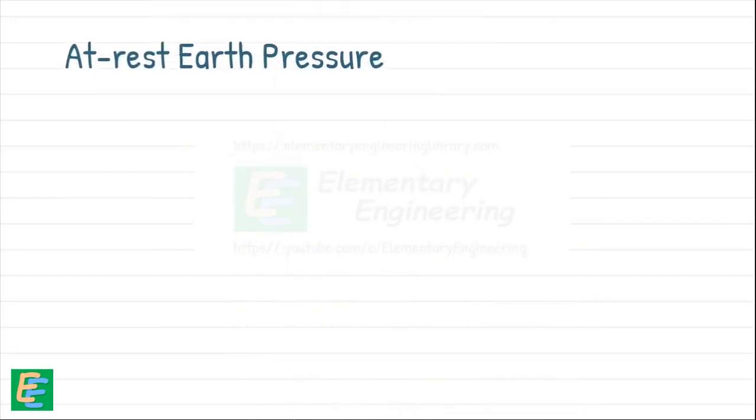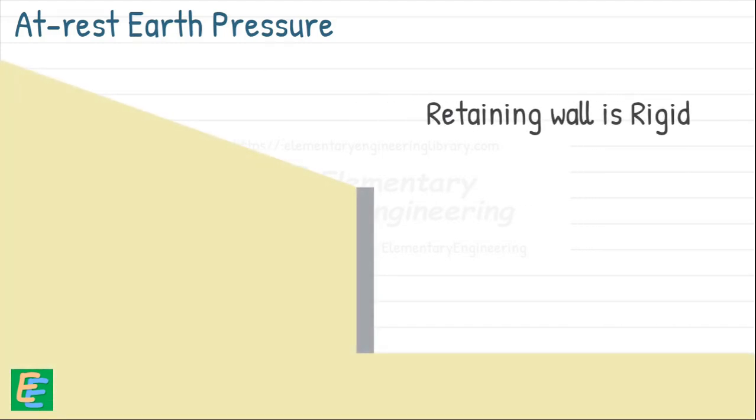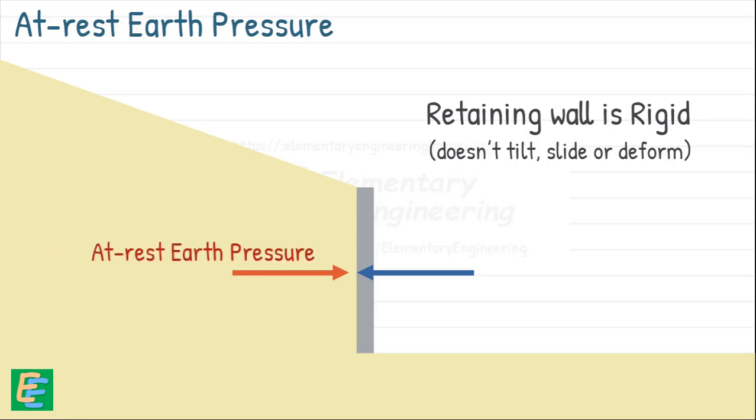First, let's look into the at rest earth pressure. When a retaining wall is completely rigid, meaning it does not tilt, slide, or deform, it holds the soil in place, preventing it from expanding outward or being compressed inward. In this condition, the horizontal stresses in the soil remain in equilibrium. The lateral pressure acting on the wall in this state is called at rest earth pressure.